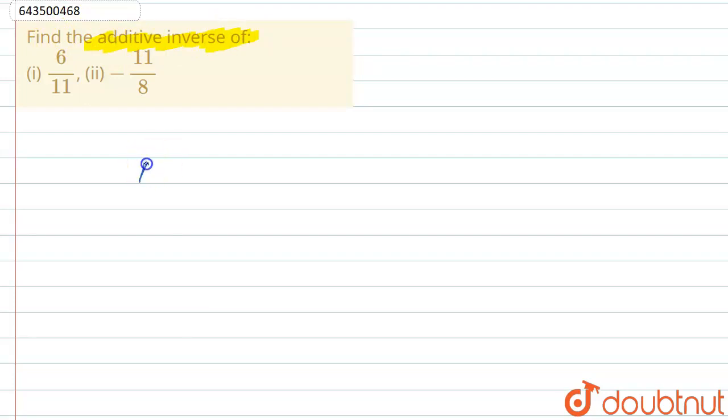We know that any number, if we take any number and we add the additive inverse of that number, then their sum, that is the sum of the number and its additive inverse is always 0.